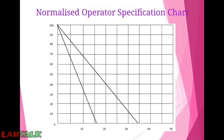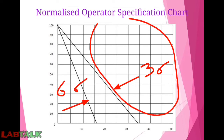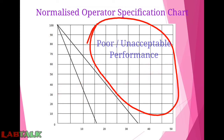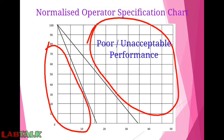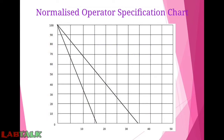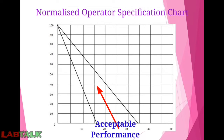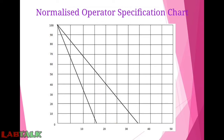Consider this normalized specification chart shown here. You can see two lines: one corresponds to the three sigma matrix and the other corresponds to the six sigma matrix. The area above the three sigma line corresponds to poor or unacceptable performance, whereas the area below the six sigma line corresponds to world-class performance. The area between these two lines corresponds to acceptable performance — not ideal, but still acceptable. We are going to use this normalized operator specification chart to determine QC frequency or for planning of internal quality control.